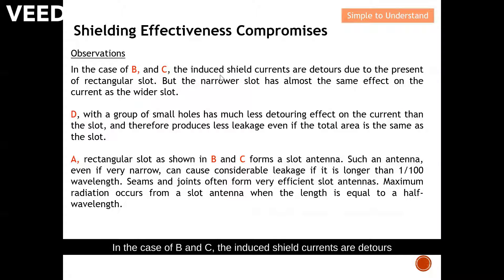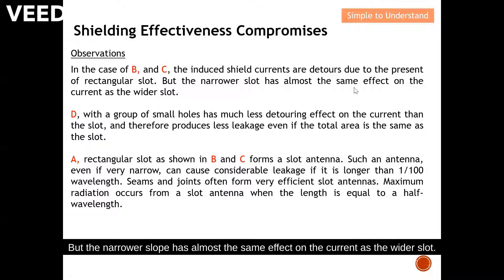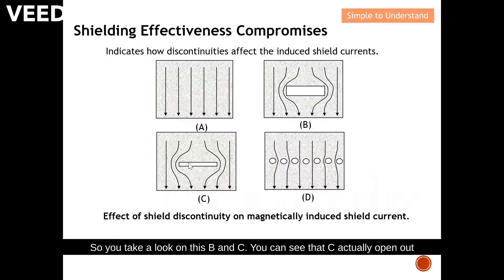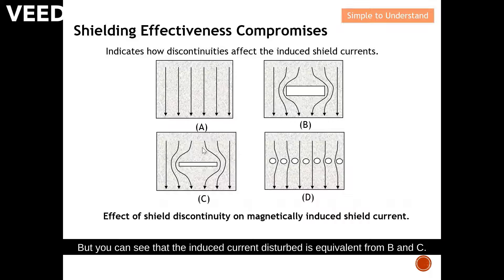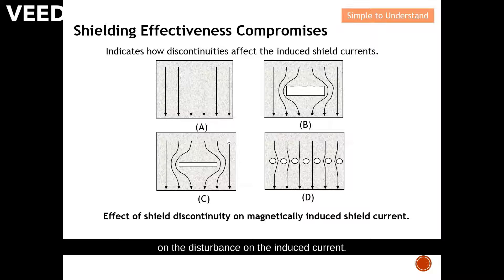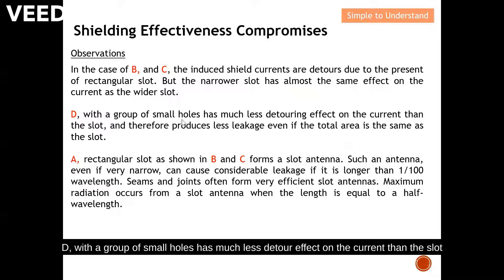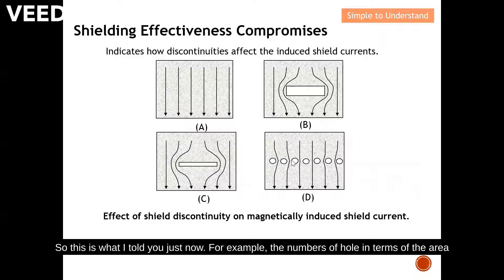In cases B and C, the induced shield currents are detoured due to the presence of a rectangular slot. The narrow slot in C has almost the same effect on the current as the wider slot in B — the disturbance to the induced current is equivalent between B and C with little difference. Case D, with a group of small holes, has much less detour effect on the current than the slot, and therefore produces less leakage even if the total area is the same as the slot.